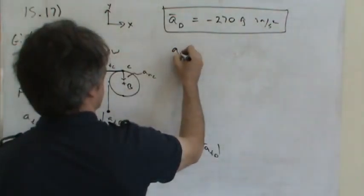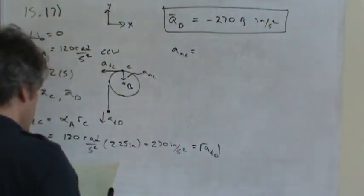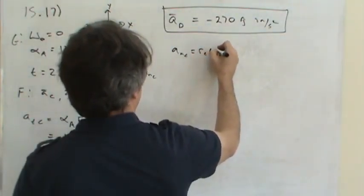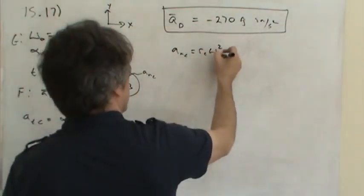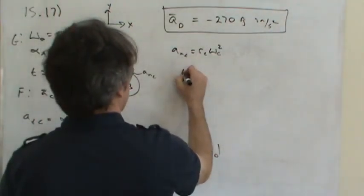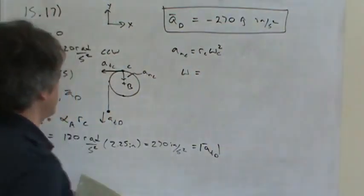Well, notice that the normal acceleration of point C would be equal to the radius of C multiplied by the angular speed of C squared. But we don't know the angular speed of C. Now the angular speed of both C and D are the same.